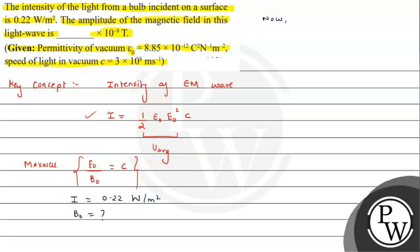We can say I = ½ε₀E₀²c. Substituting values: ε₀ = 8.85 × 10⁻¹², c = 3 × 10⁸. Solving for E₀ squared.